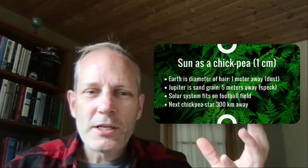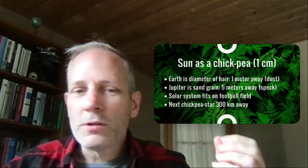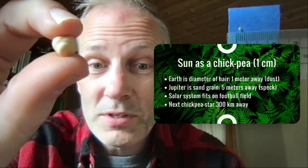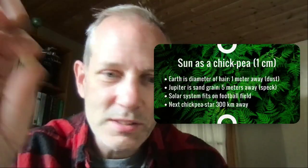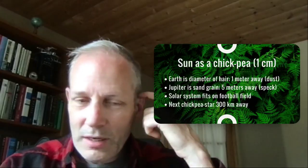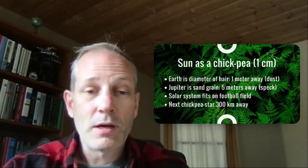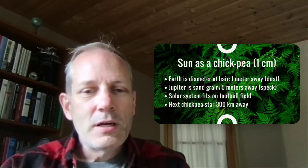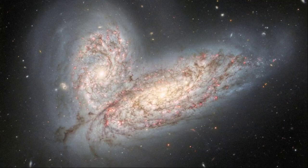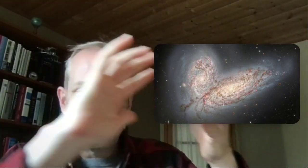Our solar system itself is pretty empty. By the time you have Jupiter and the sun, you've got 99.95% of the mass — and the rest is just tinier crumbs and specks of dust on a football field that is almost completely empty. The galaxy is even more empty. In fact, galaxies are so empty that even if two galaxies of 100 billion stars collide and move through each other, the stars are so far apart that they pass right through — no stars collide. The gas and dust will interact, but the stars themselves are such tiny little pinpricks that they pass right through.